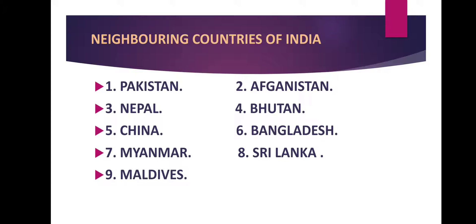Pakistan and Afghanistan are our neighbors in the northwestern part. In the north there is Nepal, Bhutan, and China. In the east there is Bangladesh and Myanmar. In the south there is Sri Lanka and Maldives. The southern peninsular part of our country is surrounded by water bodies on three sides, so Sri Lanka and Maldives are separated from India by water. The first seven countries share a direct land border with India.